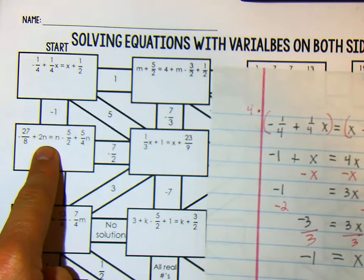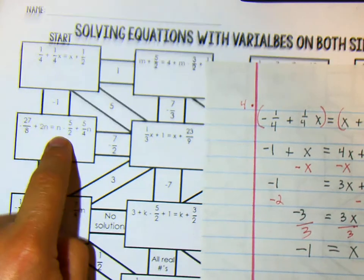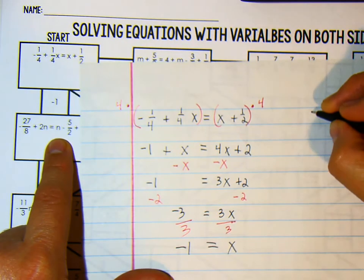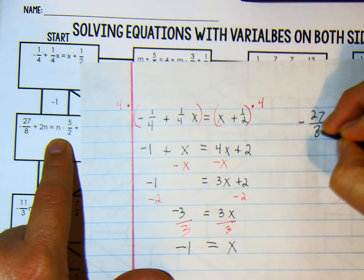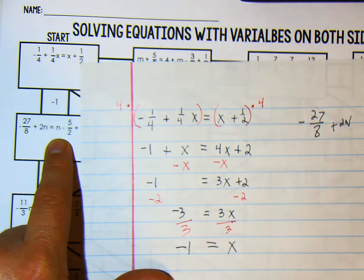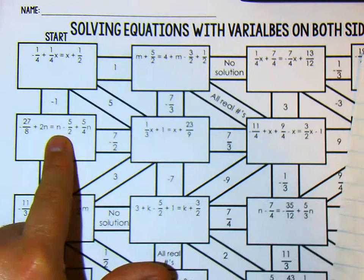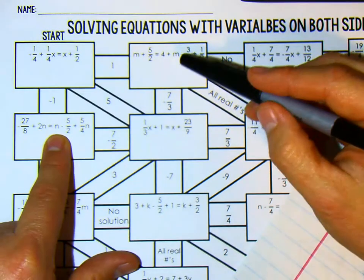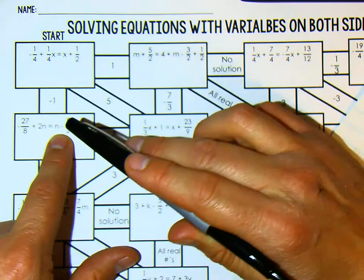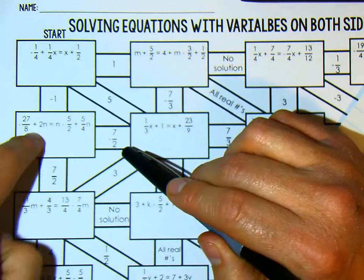And the next question that you have to do, the next equation, is this 27 over negative 8 plus 2n and then you would just start doing this problem. Now highly unlikely that you are going to have to do this one, but you are going to figure out which of these answers is correct for this one.